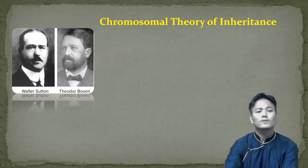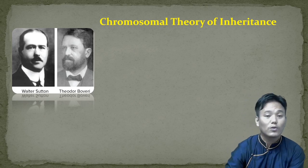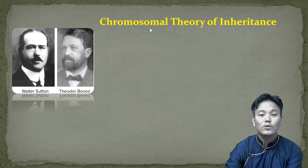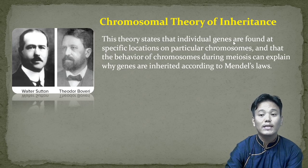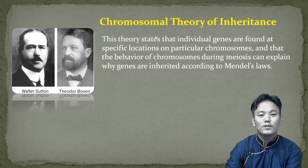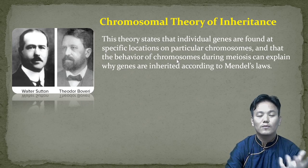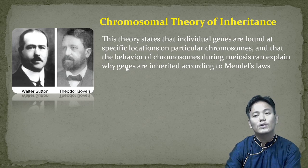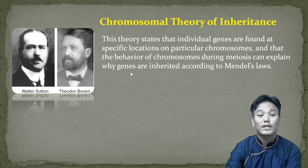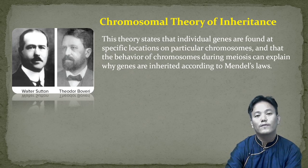Based upon these observations — the similarities between the behavior of chromosomes and the behavior of alleles or genes — Sutton and Boveri proposed their chromosomal theory of inheritance. The theory states that individual genes or alleles are found at specific locations on particular chromosomes. The behavior of chromosomes during meiosis explains why genes are inherited according to Mendelian laws.